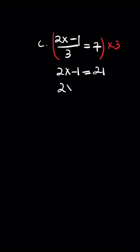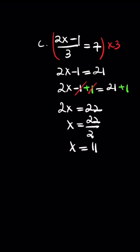Then this cancels. 2x = 22. Then x = 22 divided by 2, x is 11.